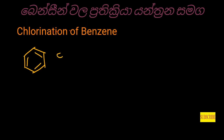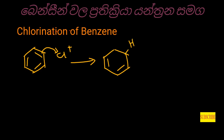Benzene has electrons. Electrons fall into the water. We need to control the carbon-carbon bond with chlorine.